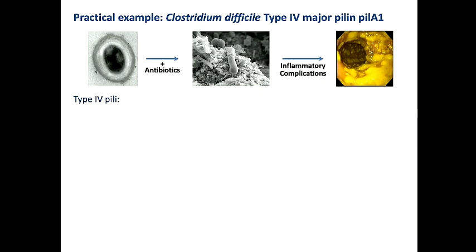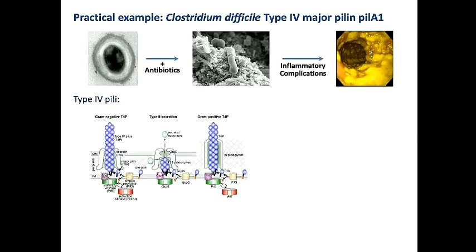Type 4 pili have been associated with the colonization stage of C. diff. That's why we're interested in it. Type 4 pili have been studied extensively in gram-negative bacteria. It's just in the last about five years that people have started looking at them in gram-positive bacteria. There's a few structures out there from type 4 pili proteins, mainly from the pillars. The proteins that make up the pillars are called pilins.